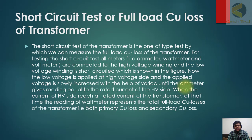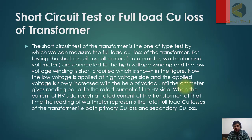For the short circuit test, all meters — ammeters, watt meters, and voltmeters — are connected to the high voltage winding, and the low voltage winding is short circuited, as shown in the figure. A low voltage is applied at the high voltage side and slowly increased using a variac until the ammeter gives a reading equal to the rated current of the HV side.